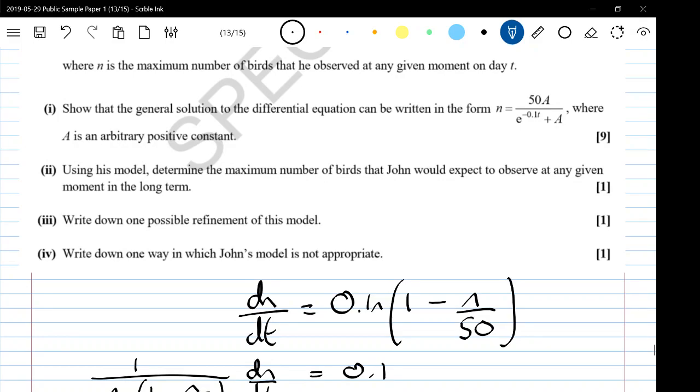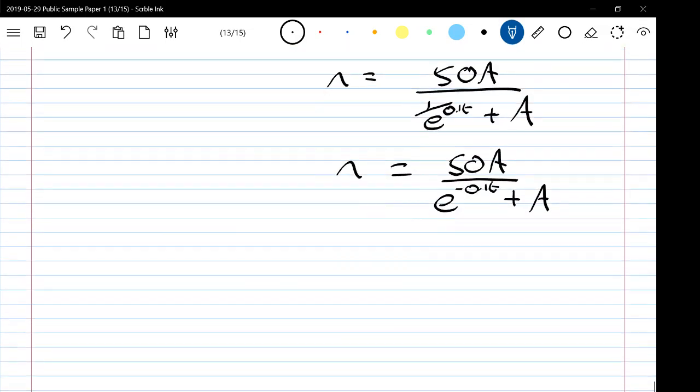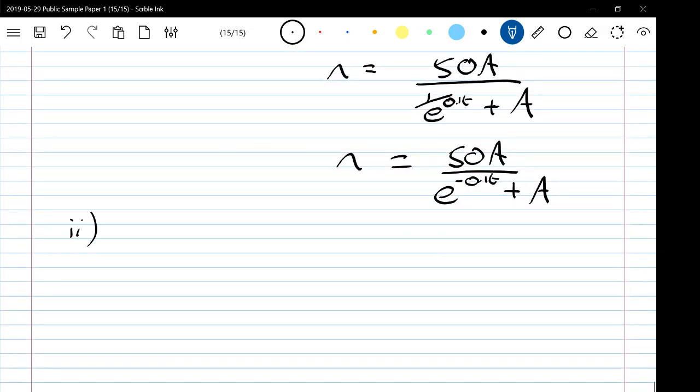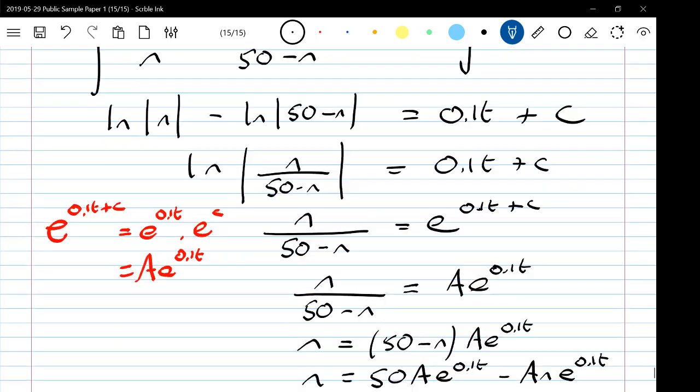Using this model, determine the maximum number of birds that John would expect to observe at any given moment in the long term. So part two, as t gets very large, e to the minus 0.1t approaches zero because we are 1 over something very large. So n approaches 50A over A, so we would approach 50. The maximum would be 50.